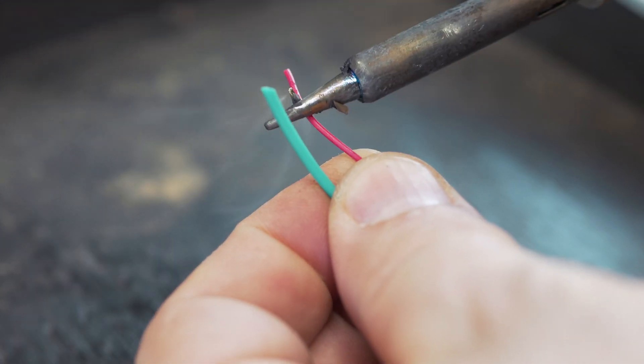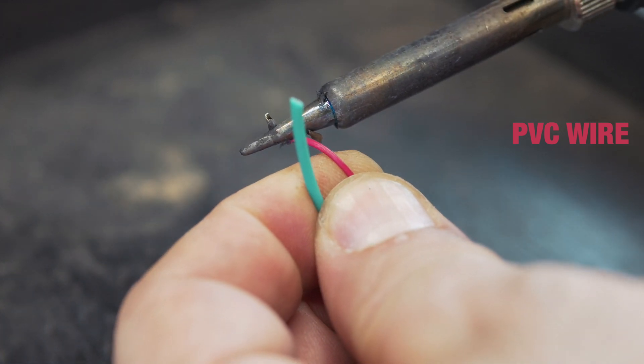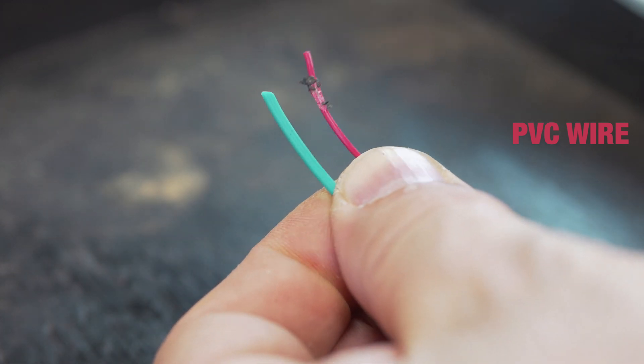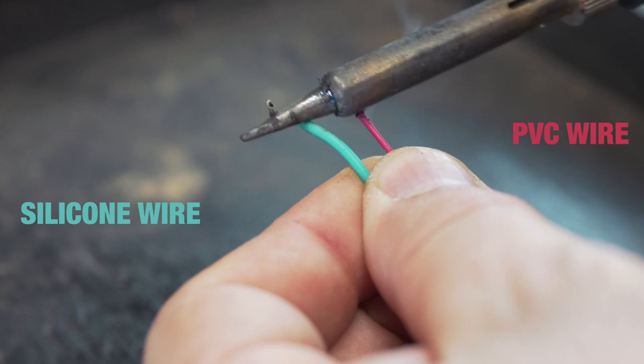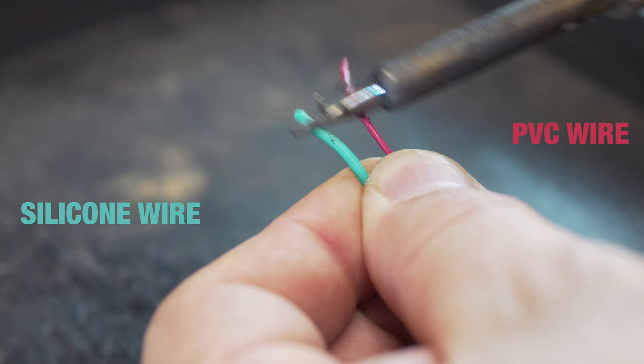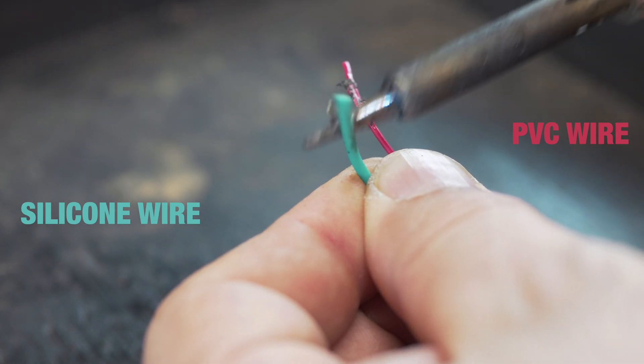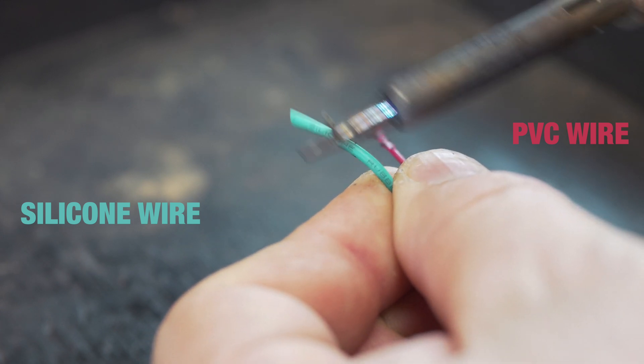Here we have PVC in red, burning and smoking, and the silicone in green, which doesn't burn or smoke at all. The rubber insulation doesn't melt when exposed to high temperatures.